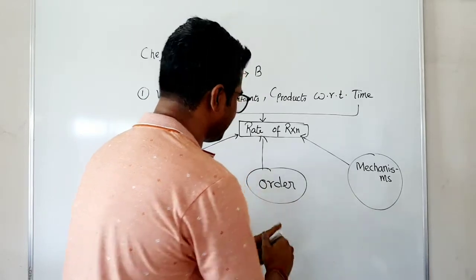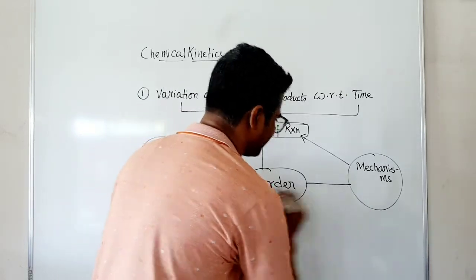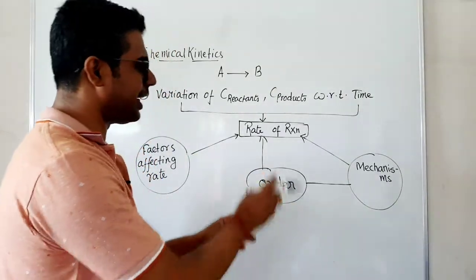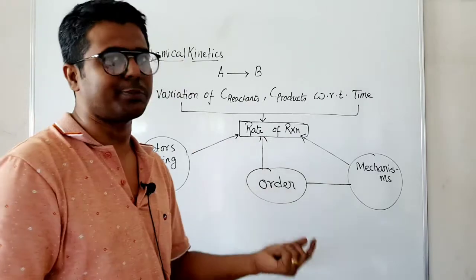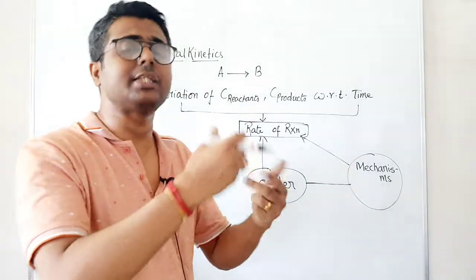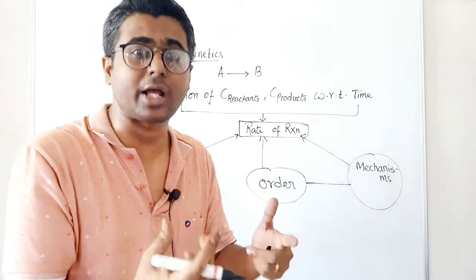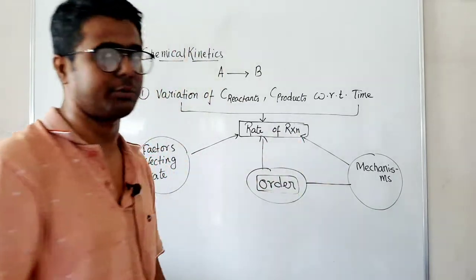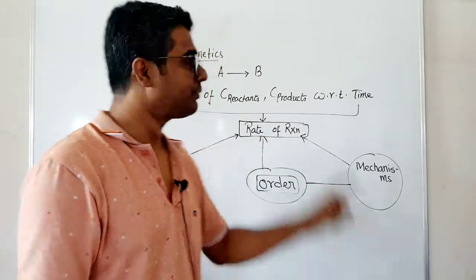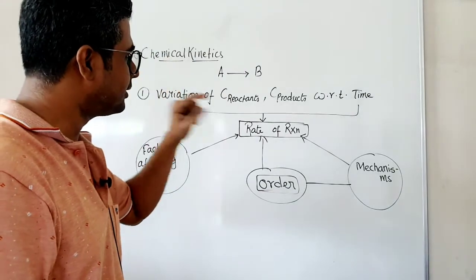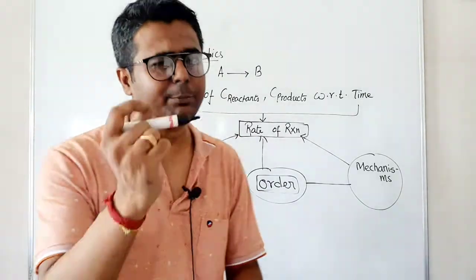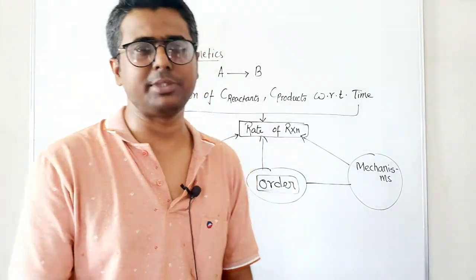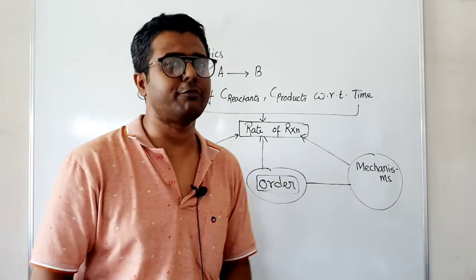We will also study order and mechanism of reaction. Order is something that affects the rate of reaction — it basically describes how much the concentration of a reactant or product is affecting the rate, and that is mathematically denoted by order. In chemical kinetics, the rate of reaction is affected by something called the order of the reaction.